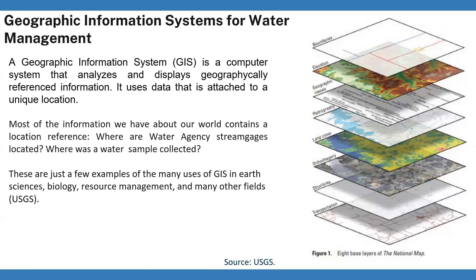GIS maps can then display all locations in an area with similar conditions so researchers and conservation officials know where to look for more rare plants or other environmental elements. Another example: by knowing the geographic location of farms using a specific fertilizer, GIS analysis of farm locations, stream locations, elevations, and rainfall can show which streams are likely to carry that fertilizer downstream — important for preventing water body pollution. These are just a few examples of the many uses of GIS in Earth sciences, biology, resource management, and many other fields.